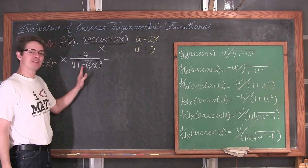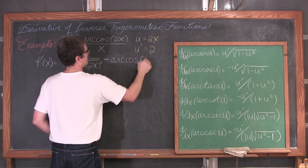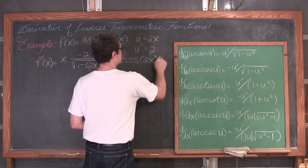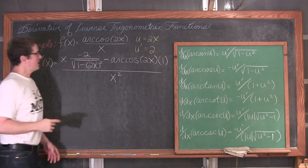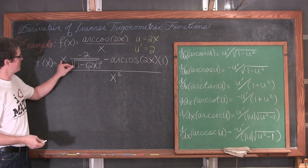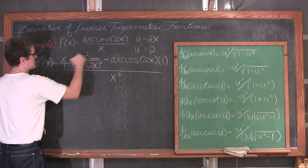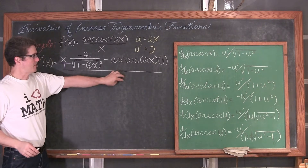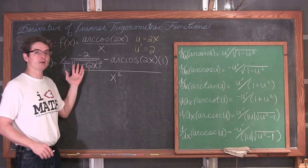Continuing the quotient rule — denominator times derivative of numerator, minus numerator times derivative of denominator — so that is arc cosine of 2x times the derivative of x with respect to x, which is 1, all over the denominator squared, which is x squared.